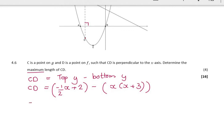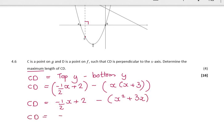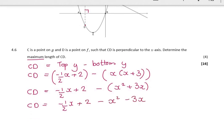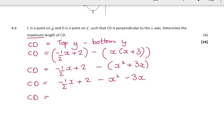So if I neaten that up a bit, this is negative 1/2 x plus 2 minus x squared plus 3x, which is going to be negative 1/2 x plus 2 minus x squared minus 3x. And now if I write that as kind of a parabola, so I put my x squareds first. Now, I can't multiply by 2 because this isn't an equation. So I just have to go minus 1/2 minus 3, so that's minus 3 and a half, which is minus 7 over 2, if I use my calculator, plus 2.